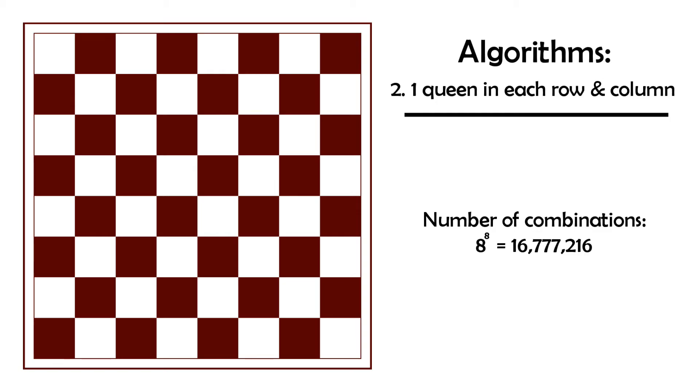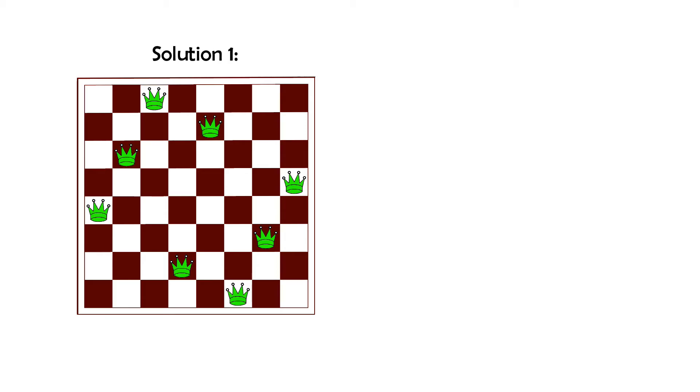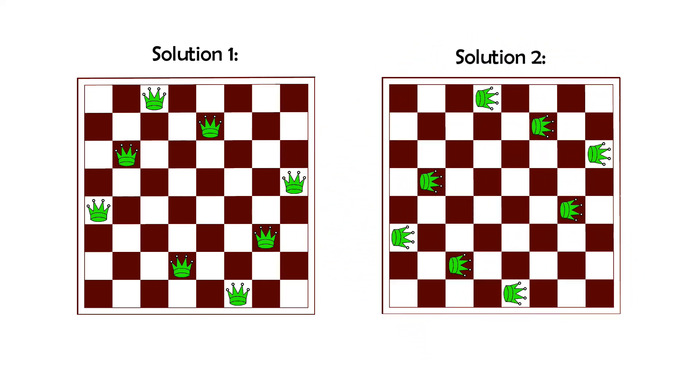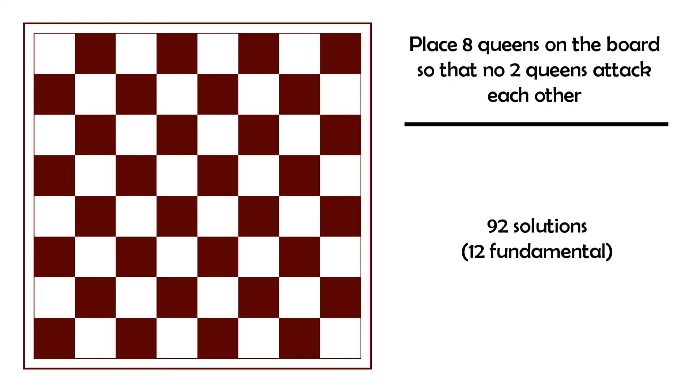Another interesting fact is that there's symmetry between certain solutions. So if you find one solution, you can in most cases find a couple more just by rotating the board by 90, 180 or 270 degrees. This can potentially save you some time and find certain solutions faster. I mentioned earlier that this puzzle has 92 total solutions. Well, it actually has 12 so-called fundamental solutions. The rest are just different rotations of those 12.